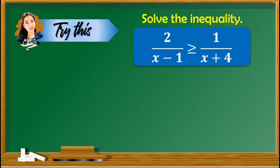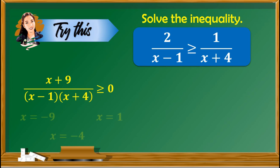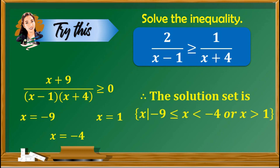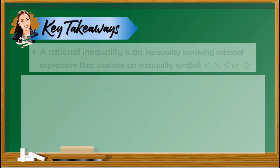How did you find the lesson? Hopefully it was not too hard and you were able to follow each problem. Just remember that in solving rational inequalities, all you need to do is follow the steps provided to arrive at the correct answer. Now it is your turn to apply what you have learned. You may pause the video to answer the given problem. The standard form and critical numbers are shown, and the final answer is the set of x such that x is greater than or equal to negative 9 but less than negative 4, or x is greater than 1.